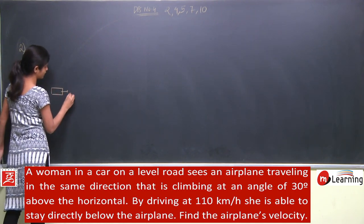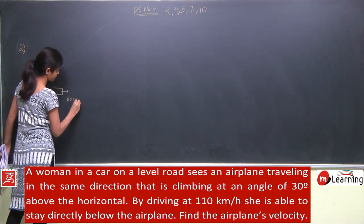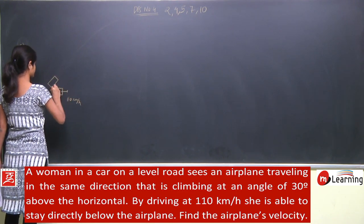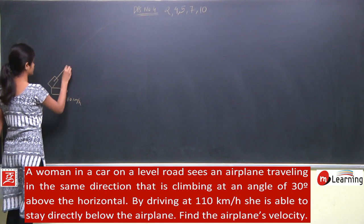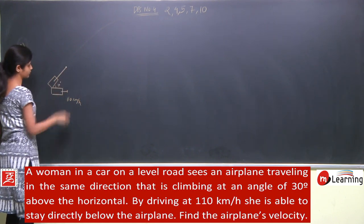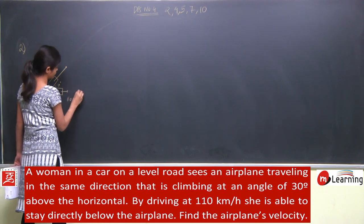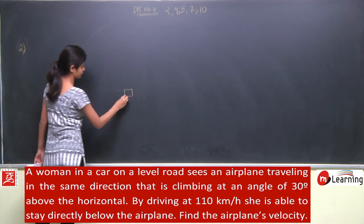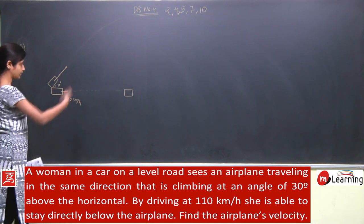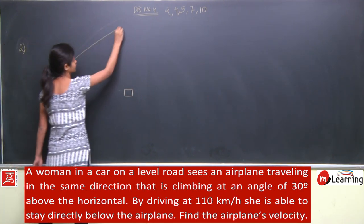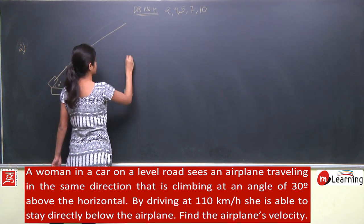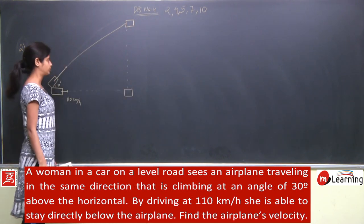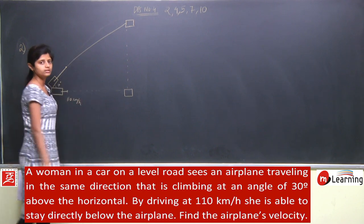This woman is moving with 110 km per hour. Same time mein ek airplane take off karti hai, making an angle of 30 degrees with the horizontal. Suppose kuch time ke baad yeh woman car yahaan pe aa jaati hai, is point mein aa jaati hai. So what she observes is that by that time yeh jo plane hoti hai, yeh uske directly upar hoti hai. So you need to find the velocity of this airplane.